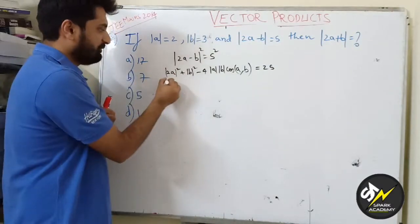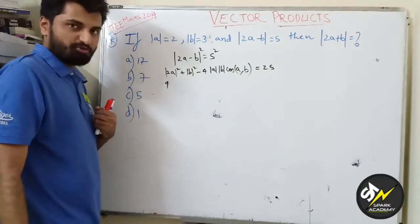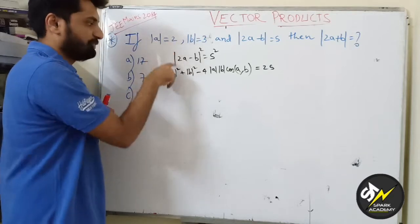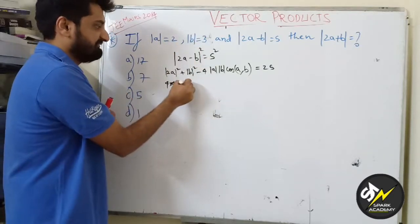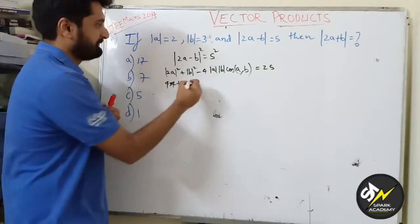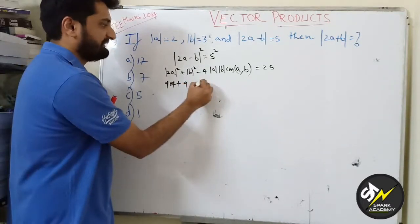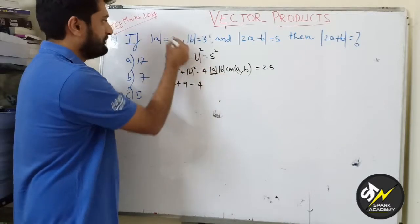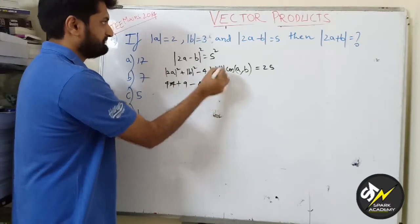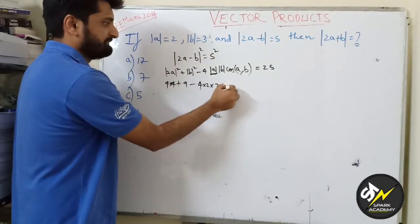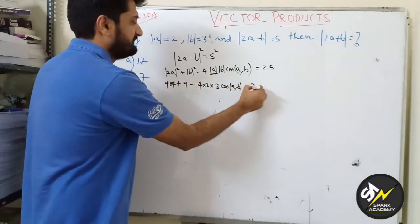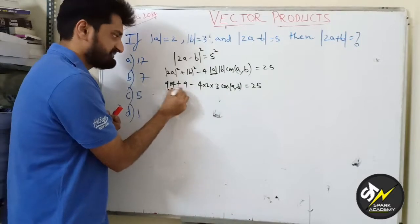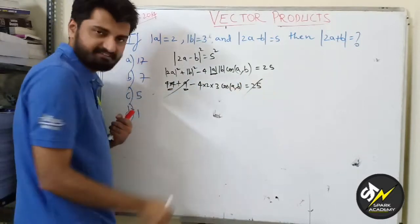Now 2 I can take out which will be 2² = 4. |a| value is 2, 2² will be 4. |b| value is 3, 3² will be 9. Minus this is 4 times |a| which is 2, |b| which is 3. This cos(a,b) is unknown, we don't know the angle yet, equals 25. This is 16 + 9, 25 cancels.